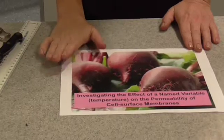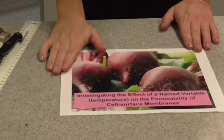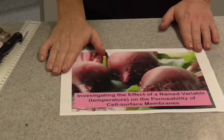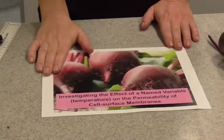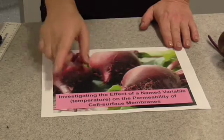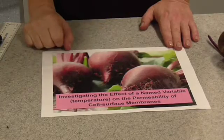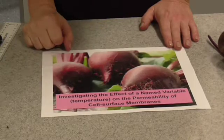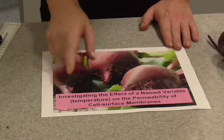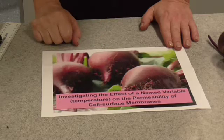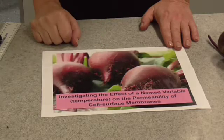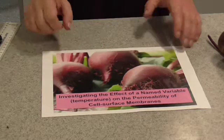I'm going to show you how to do one of the required A-level biology practicals. This is for AS and A-level, where you're going to investigate the effects of a named variable — in this case temperature — on the permeability of cell surface membranes.